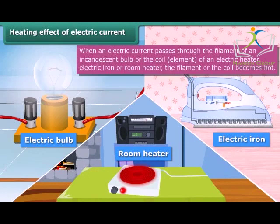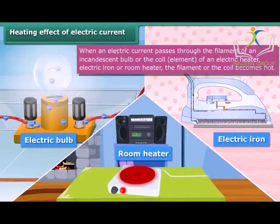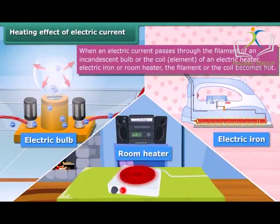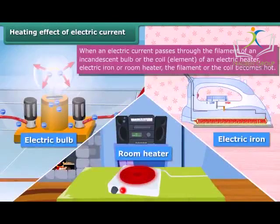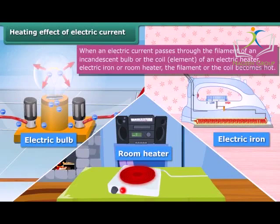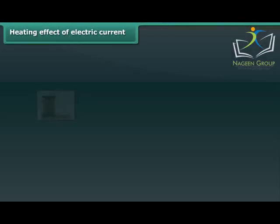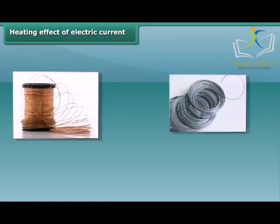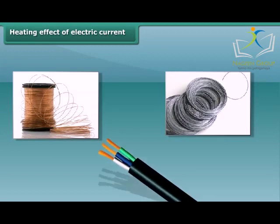When an electric current is passed through a metallic wire — like the filament of a bulb or the coil of an electric heater, geyser, electric iron, or room heater — the coil becomes hot and glowing. This is known as the heating effect of electric current. In this condition, they radiate heat and light. The amount of heat produced in a wire depends on its material, length, and thickness.